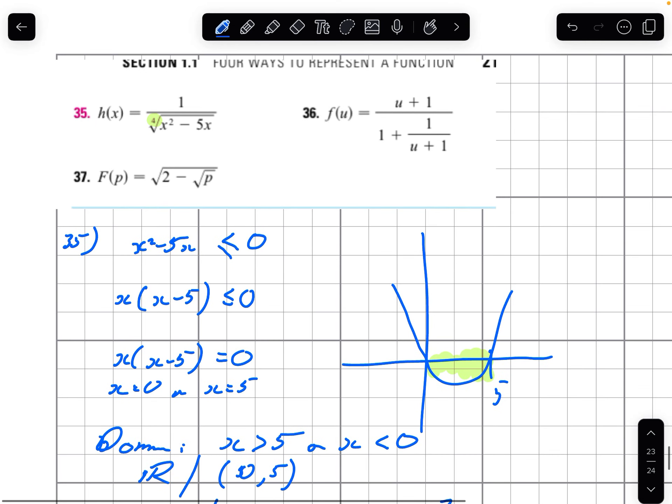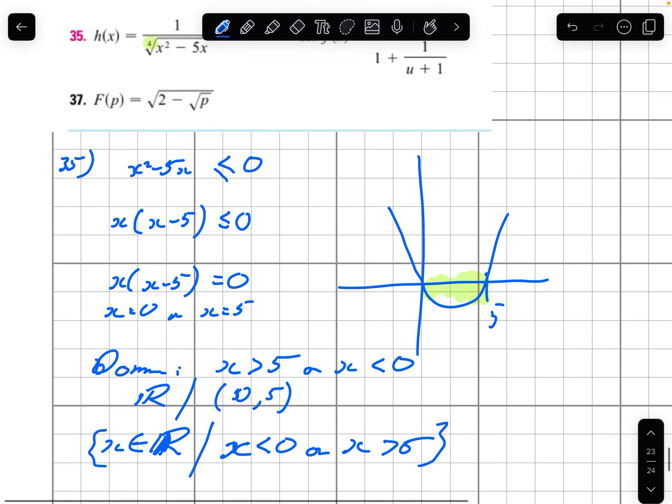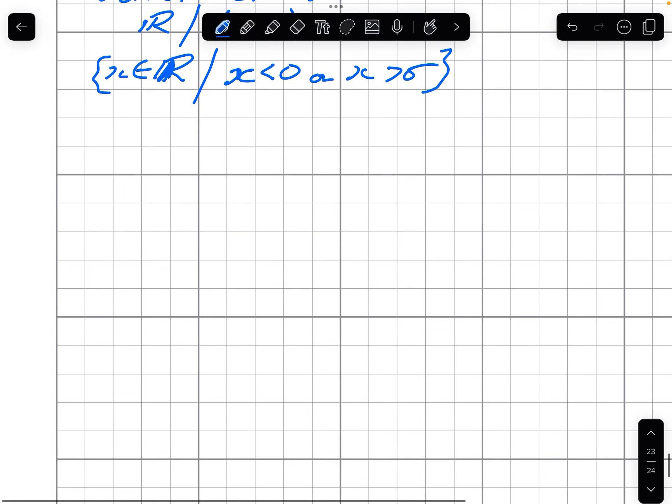And the next one. u plus 1 over 1 over 1 over u plus 1. Now we've got two possible issues here. Because we've got one fraction, which will give us a problem if it has a 0 denominator. And we've got a second fraction.